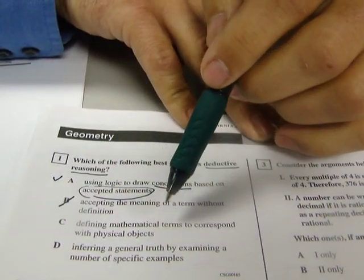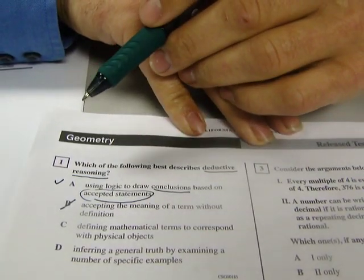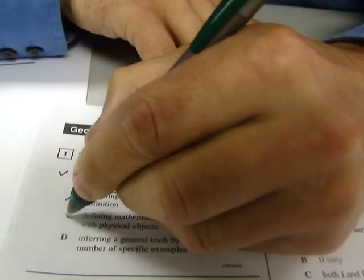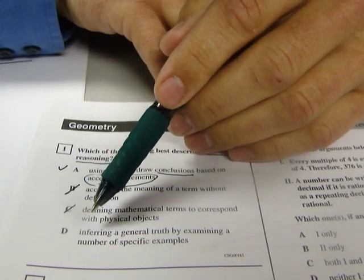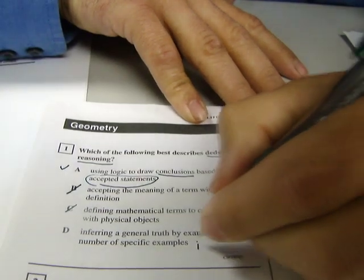Defining mathematical terms to correspond with physical objects? That's not deductive reasoning. Inferring a general truth by examining a number of specific examples. This is actually inductive.